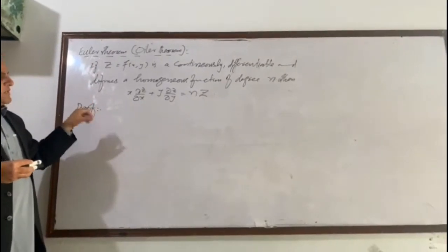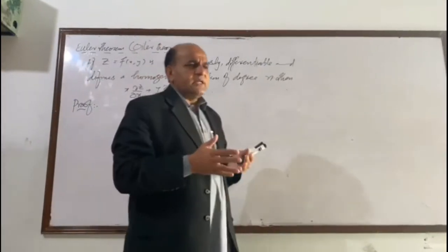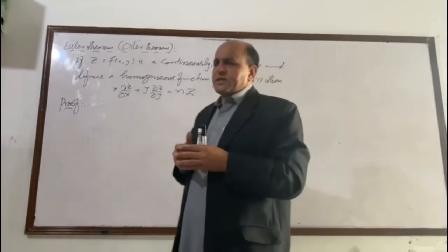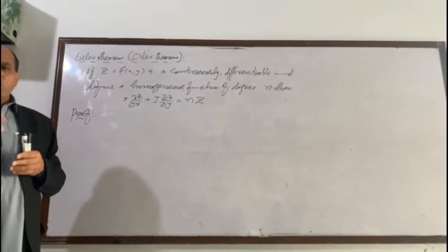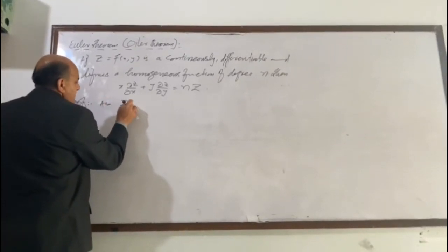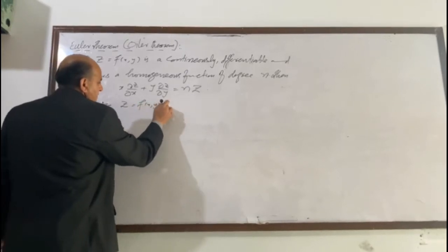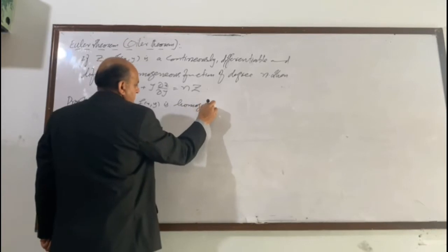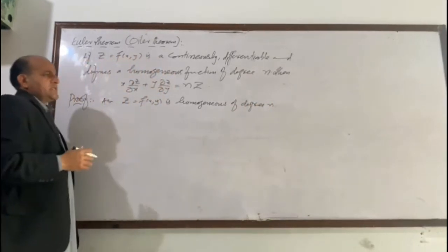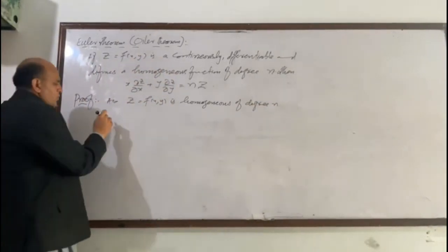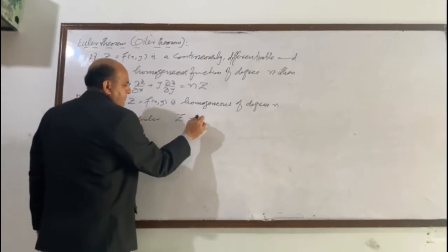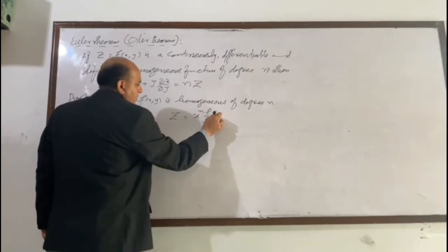We are now trying to prove this theorem. It is given to us that the function is homogeneous. By the definition of homogeneity of a function, if a function is homogeneous, then each of its terms can be written in the form of y over x. For that purpose, we write that z = f(x, y) is homogeneous of degree n. It is given to us that it is homogeneous of degree n.